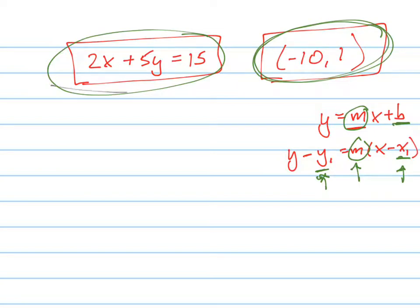So what do I need to find from this equation? I need to find the slope. So what's the slope of that line? Well, the easiest way to find the slope of that line is to put it in slope-intercept form.